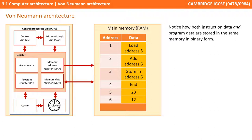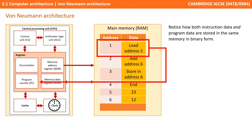Let's have a closer look at the memory. You will notice that each instruction is stored in a location in memory, and each location has an address. Therefore, the processor can fetch an instruction stored in, for example, memory address 1, and bring it back into the processor.